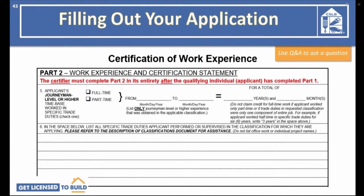In Part 2 of the Certification of Work Experience, the certifier must include the dates in which you obtained the experience and select if you were working part-time or full-time. If you are working part-time, you will receive 50% credit for that time, meaning you will need to provide 8 years of experience within the last 10 years to meet the 4-year requirement. On Line 6, your certifier will need to list the duties that you performed or supervised that are relatable for the classification. You can read a description of trade duties in CSLB's Description of Classifications booklet — but do not copy and paste from it. Your certifier should complete this section in their own words.